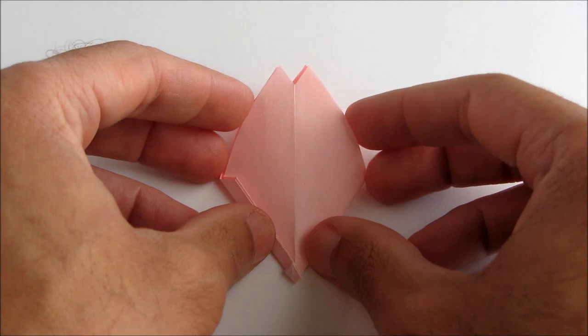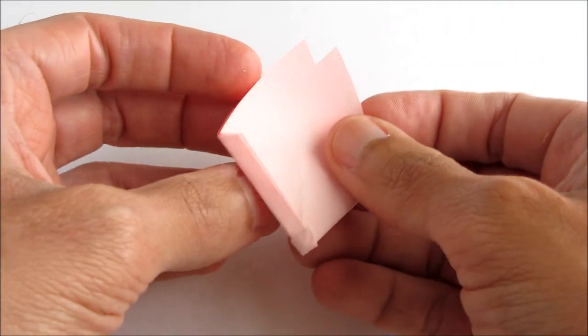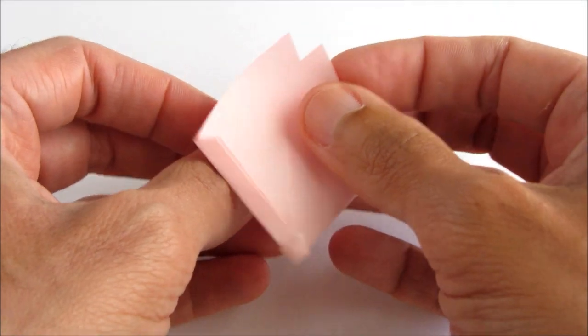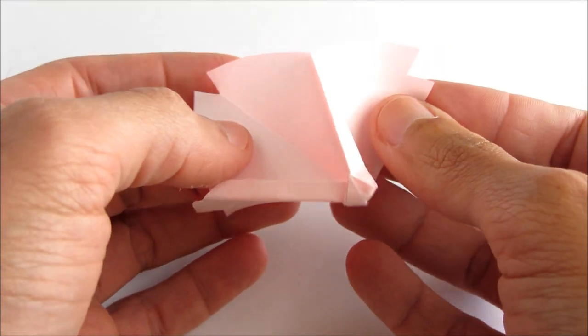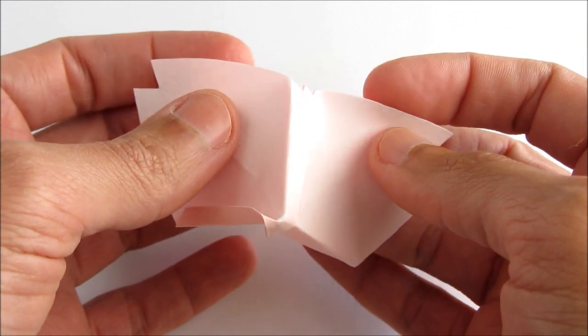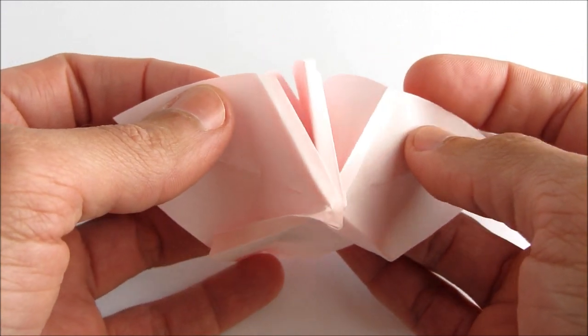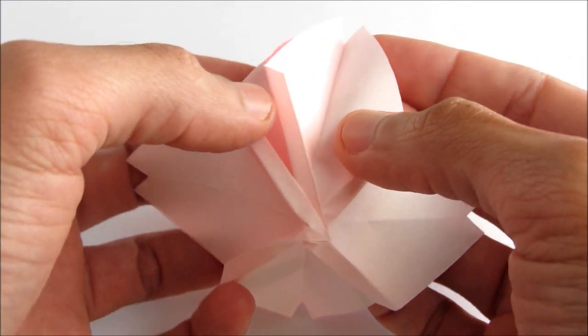Now that we've done that, we're going to unfold the cherry blossom carefully, just a little bit at a time. Don't yank it open. Just go around the piece just like this and fold gently.